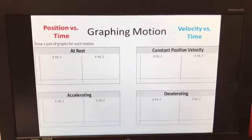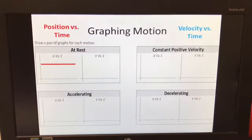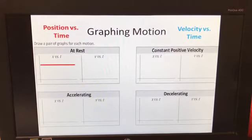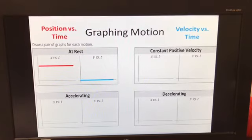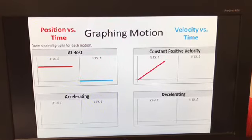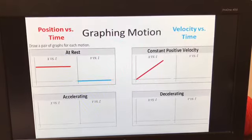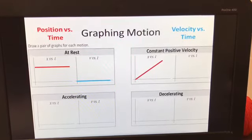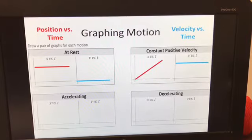Graphing motion. So at rest, position versus time, horizontal, anywhere there is horizontal. Velocity versus time must be on the zero. Constant positive velocity for position versus time is linear slope. The steeper the slope, the faster it's going. Velocity versus time is going to be horizontal. The higher that graph, the faster it's going.